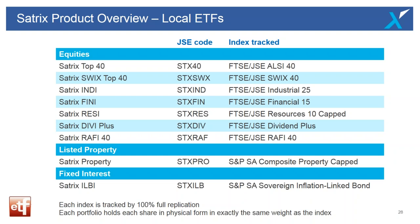What products has Satrix got in the market? They started with the Satrix Top 40, listed on the JSE around 2000. Then the Indi and Fini in 2002. After that came the SWIX — the Shareholder Weighted Index — the Resi, the Divi Plus listed in 2007, and the Rafi 40 in 2008. Then after a long hiatus, just in the last half year or so, they've listed a property fund, a listed property index, and inflation-linked bonds.